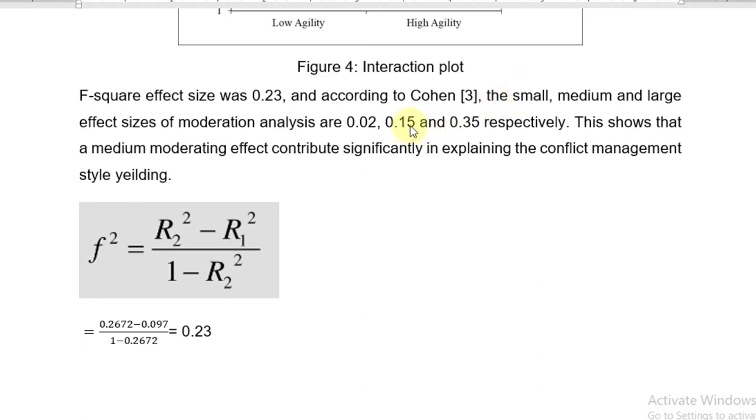As 0.23 lies between 0.15 and 0.35, we call it a medium moderating effect that contributes significantly in explaining the response variable. Thanks for watching the video.